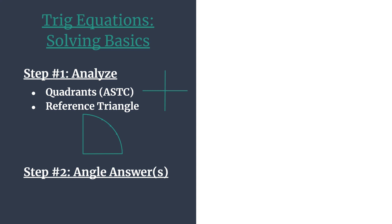In the first step we'll do our analysis. We'll find the quadrants for our angle answers using the acronym ASTC — that's the one that helps us know which trig functions are positive in each quadrant. We'll also make use of our reference triangle, thinking back to our special right triangles and how they work on the unit circle. If you need help with any of that, I'll post a link in the video description to some unit circle basic videos.